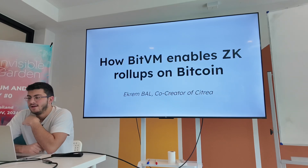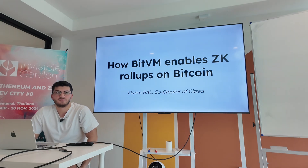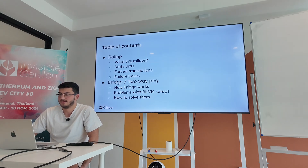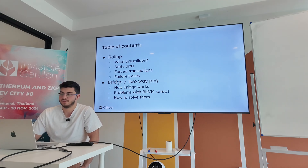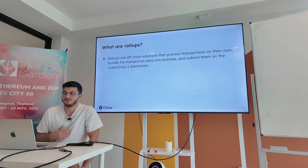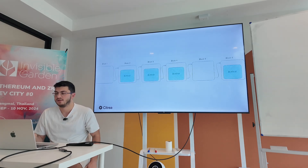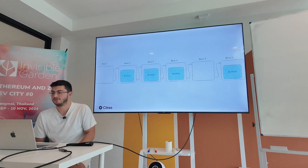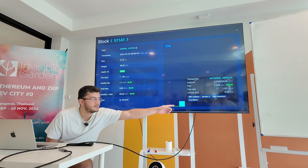Hello everyone. This is my talk from TabConf last week. I'll start with how rollups work on Bitcoin and then add how we can add BitVM on top of it. We'll start with rollups, state diffs, forced transactions, and some failure cases, and then go into how we can add a bridge on top of this rollup with BitVM. As you all know, rollups are off-chain solutions that process transactions and put them as bundles. A Bitcoin rollup would look like this — bundles of transactions on Bitcoin from our testnet, and that little square is a bundle of transactions.